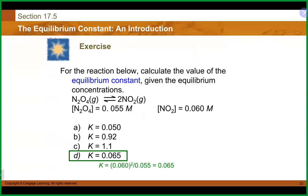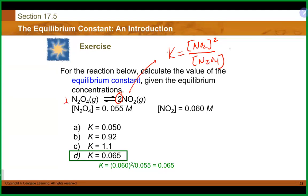Let's calculate the equilibrium constant given equilibrium concentrations. We would write our K as the concentration of NO₂ squared — because of the coefficient — divided by the concentration of N₂O₄, where the coefficient is one. Plugging in, we get 0.060 squared divided by 0.055, which gives a K value of 0.065. That is a small value of K, meaning at equilibrium we'd mainly expect to have reactants present in greater proportion than products.